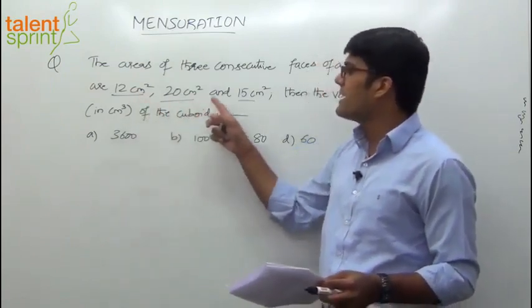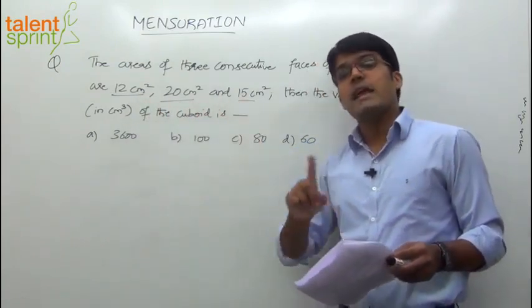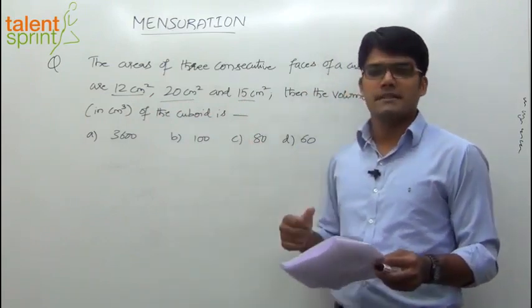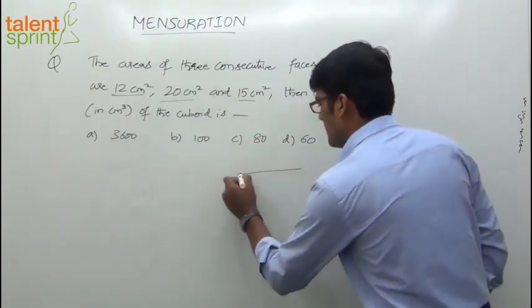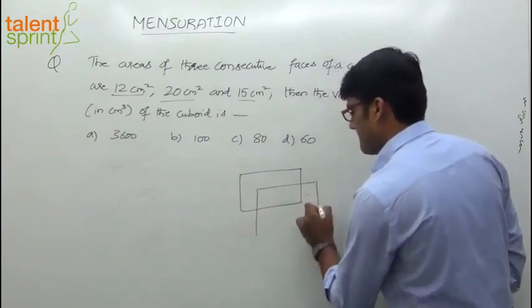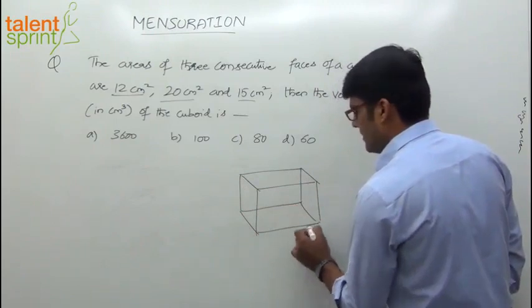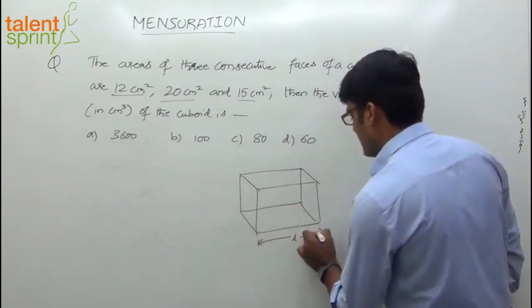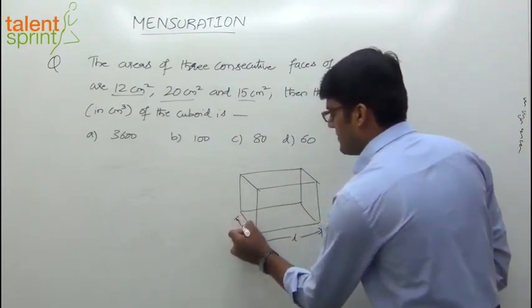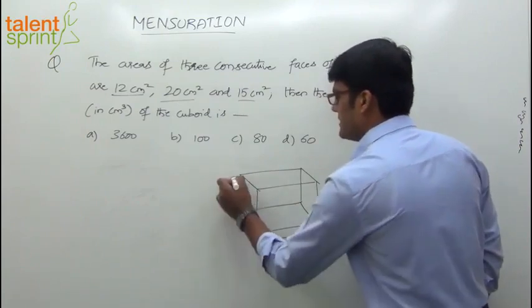But here if you observe, all three are different, which means all three types of faces have been given. If you try to draw a cuboid, this is the length L, here is the breadth B, and this is the height H.